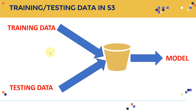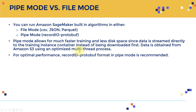To perform training and testing in SageMaker, you first need to have your training data and testing data available in Amazon S3. You put them in an S3 bucket, train the model, and after training, the model artifacts — trained weights, hyperparameters, and so on — are saved back to an S3 bucket.